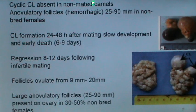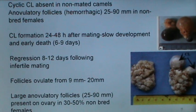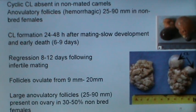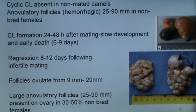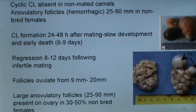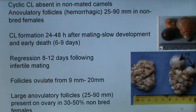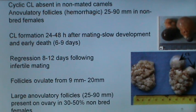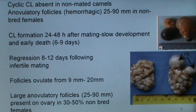The cyclic CL is absent in non-mated camels. Anovulatory follicles turn into hemorrhagic follicles of 25 to 90 mm in non-bred camels — this is peculiar to the camel only. CL formation occurs 24 to 48 hours after mating, with slow development and early death at 6 to 9 days. Regression takes place in 8 to 12 days following infertile mating. Follicles that ovulate range from 9 mm to 20 mm; any follicle beyond 20 mm converts into a large anovulatory follicle of 25 to 90 mm, present in 30 to 50% of non-bred female camels.